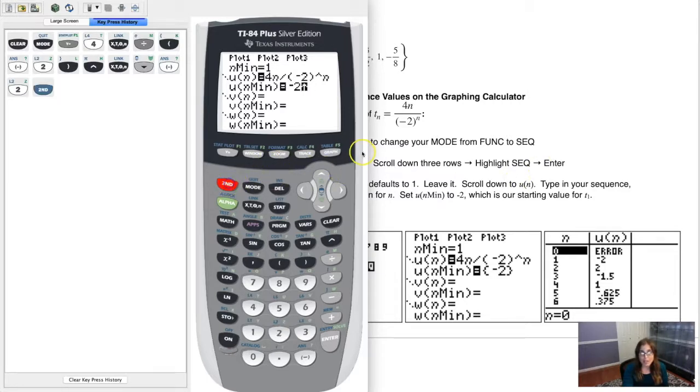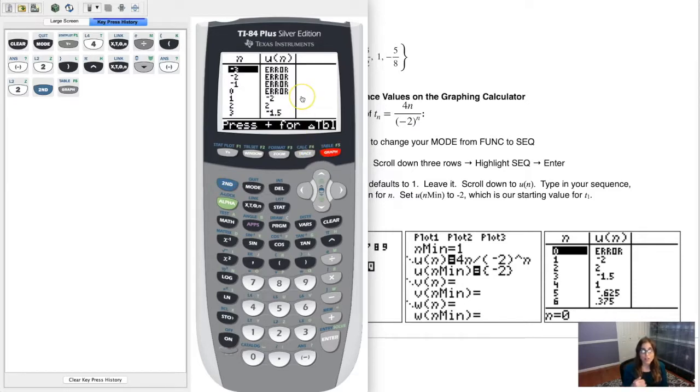Let's go into our table function and see what's going on here. So when I hit second and graph and call up my table function, you can see all sorts of options here. Now we get a bunch of errors because there is no t sub negative 3, there is no t sub negative 2, t sub negative 1. We started with t sub 1 being negative 2, right? And then let's look at, let me scroll down a bit, and let's look at the first few terms.